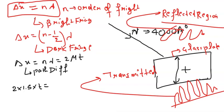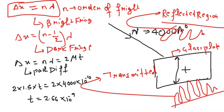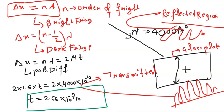Lambda is 4000 Angstroms and 1 Angstrom = 10 to the power minus 10 meters. The thickness of the plate comes out to be 2.66 × 10 to the power minus 7 meters. I hope this clears your doubt. This is our final answer.